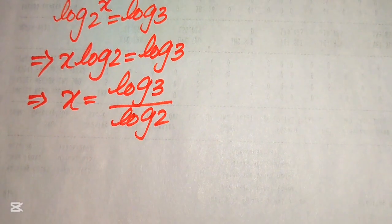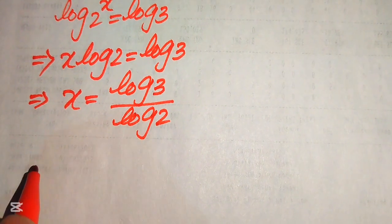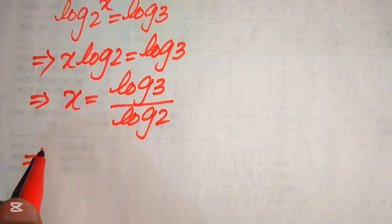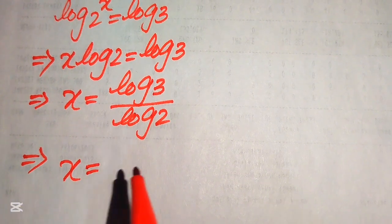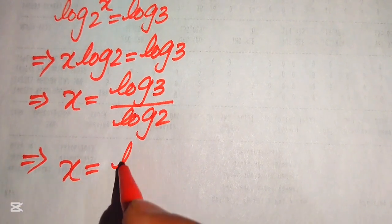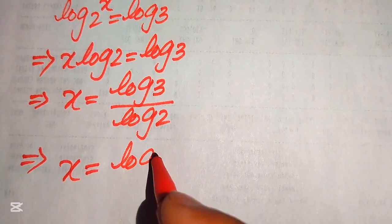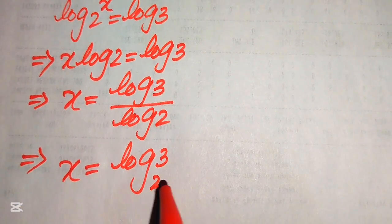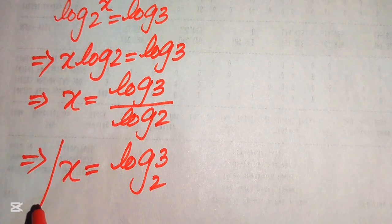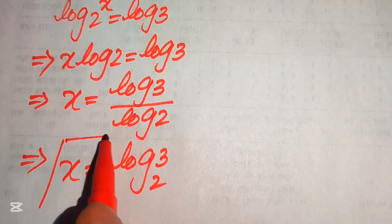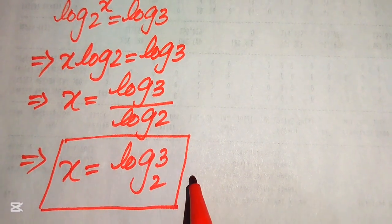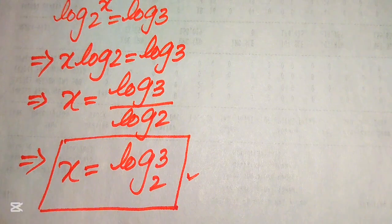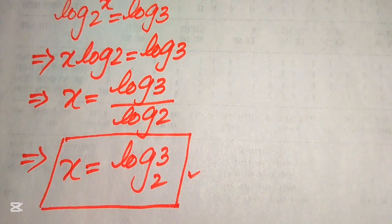Applying the change of base property, we combine the two logs to write x equals log base 2 of 3. This is the first real value of x in this problem.